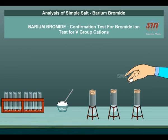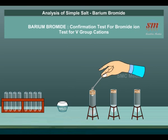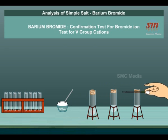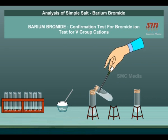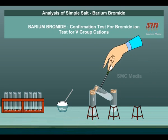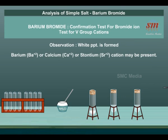Test for 5th Group Cations: To the salt solution, NH₄Cl salt is added, then NH₄OH and (NH₄)₂CO₃ solutions are added. A white precipitate is formed. Inference: Barium Ba²⁺, Calcium Ca²⁺, or Strontium Sr²⁺ cation may be present.